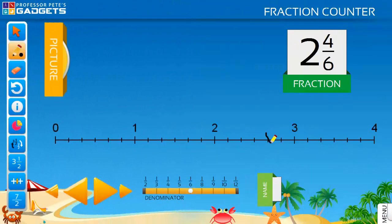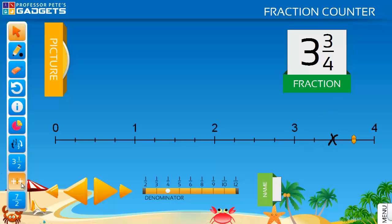Hide the picture, fraction, name, and fractions on the line as well as the marker, and have your students mark on the number line where they think the mixed number shown lies.